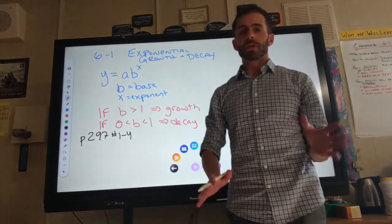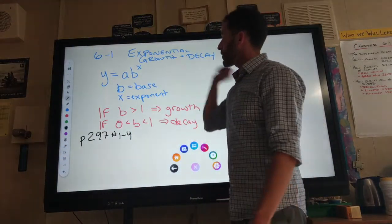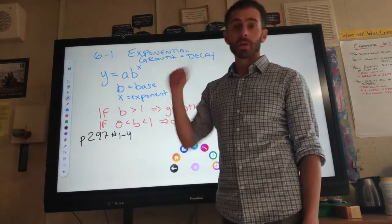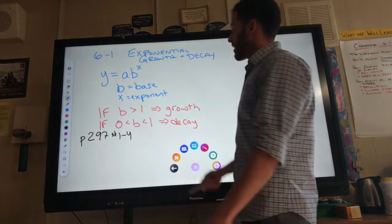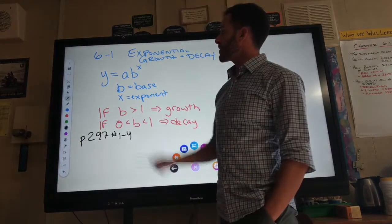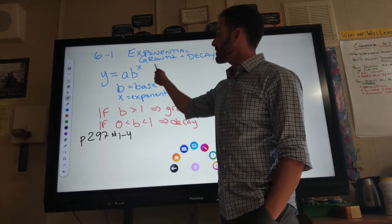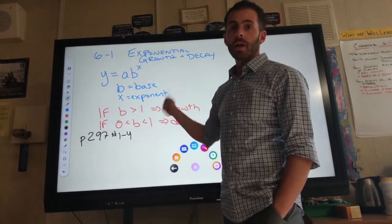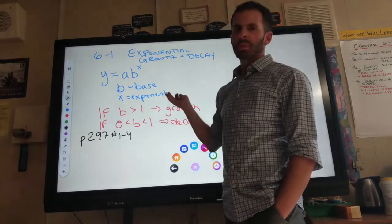Welcome to the only video for 6-1, exponential growth and decay. You should be on page 296. Here is your general equation: y equals a b to the x. b is your base, x is your exponent. Pretty easy to understand.